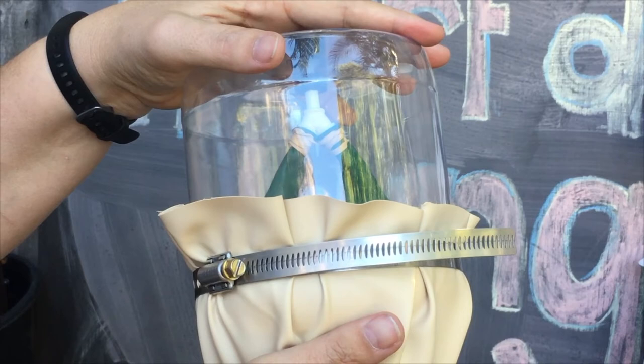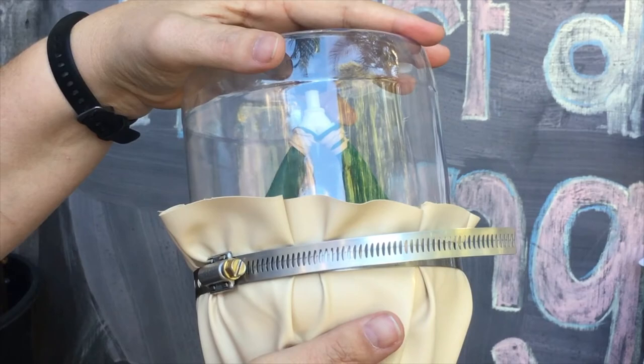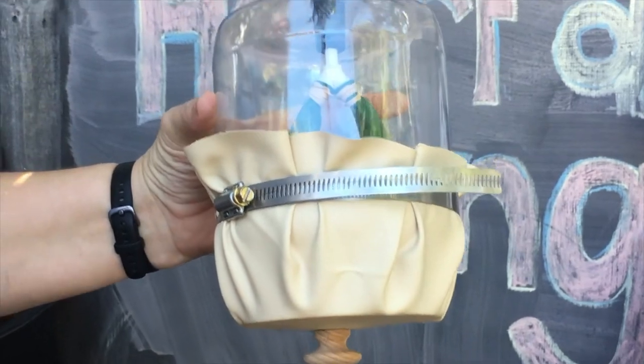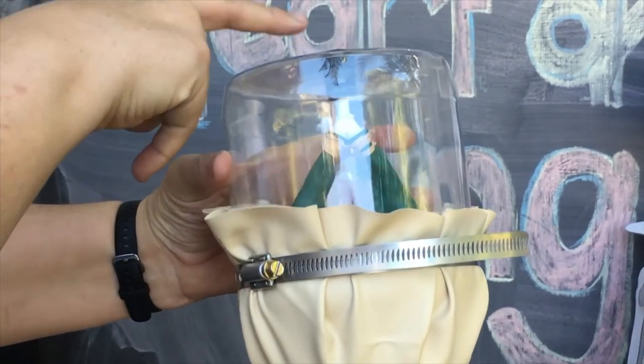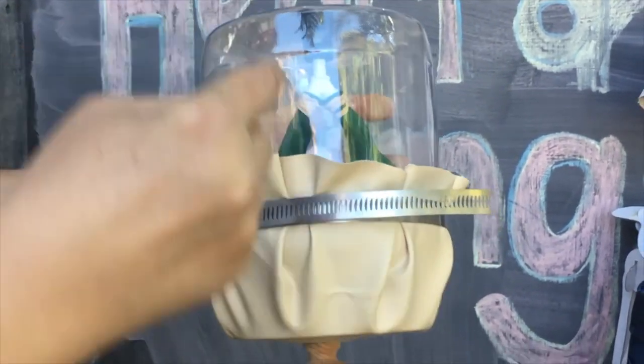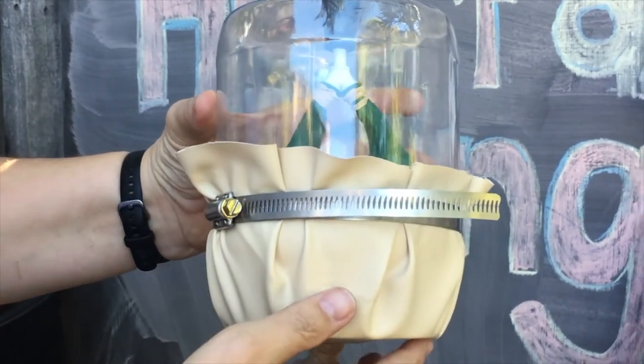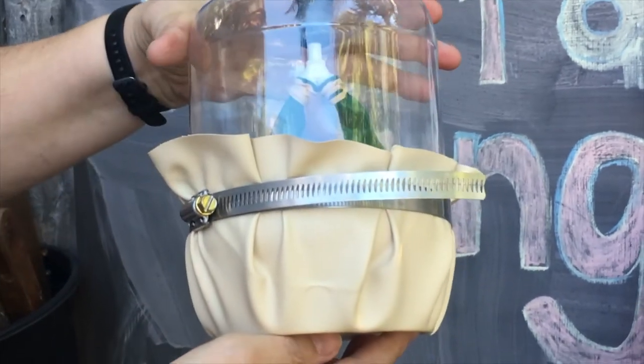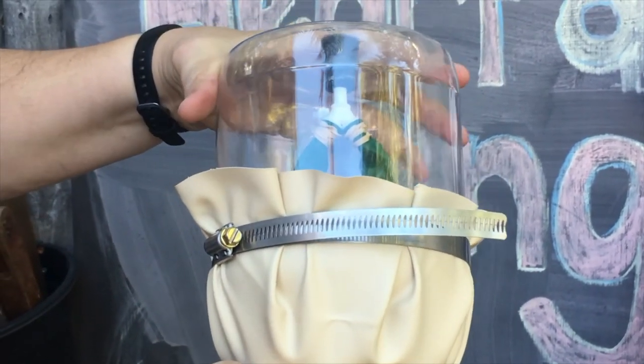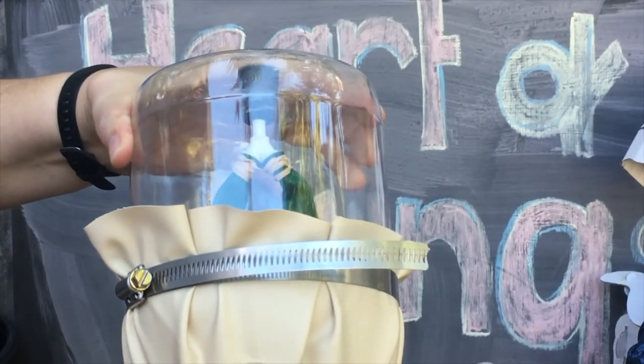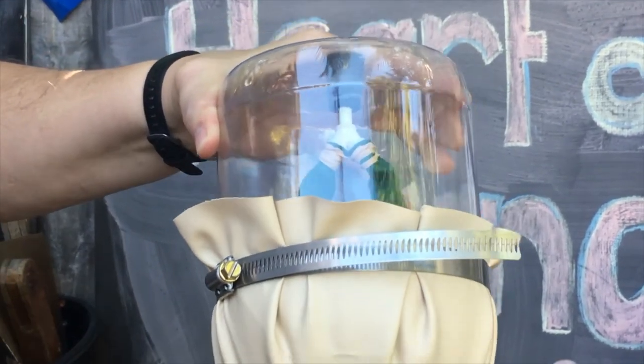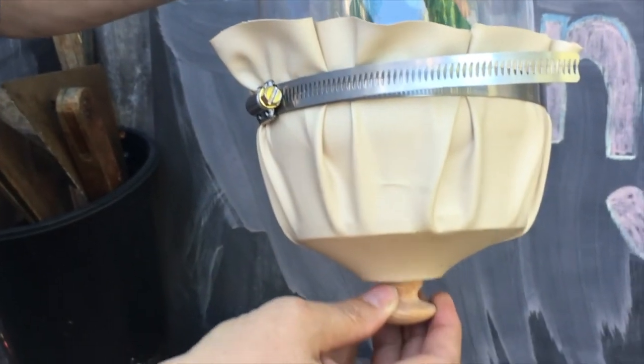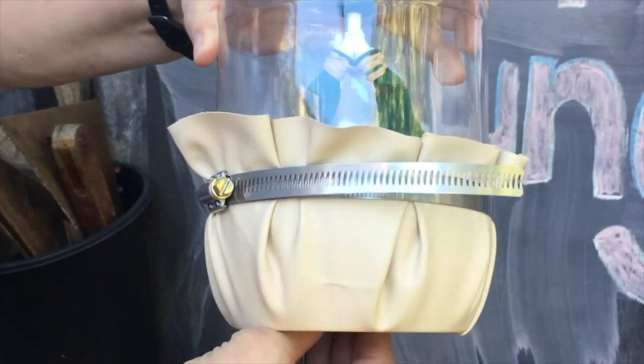When our diaphragm or our muscle under the lungs moves up and down it causes air to be pushed in or pushed out of our lungs. Watch the balloons as I pull the rubber diaphragm and make the balloons fill up with air and then deflate and lose all their air. So the air going in and out of the balloons is the same as the air going in and out of our lungs.